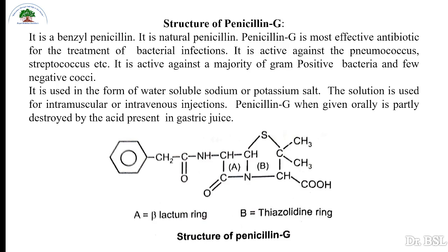Penicillin G is benzyl penicillin and is a natural penicillin. It is the most effective antibiotic for the treatment of bacterial infections and is active against pneumococcus and streptococcus. It is active against a majority of gram-positive bacteria and few gram-negative cocci. It is used in the form of water-soluble sodium or potassium salts, and the solution is used for intramuscular or intravenous injections.